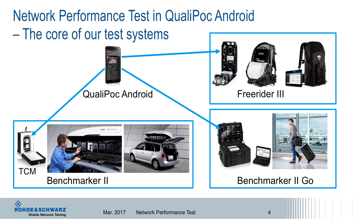The network performance test is integrated into our Qualipoc Android software running on the smartphone, and this is part of all our measurement equipment. Test solutions include the Freerider 3, which is a backpack solution; the Qualipoc Android integrated into the Benchmarker 2, which features the TCM — the test device containment module — offering a temperature-controlled environment for smartphones; and the Qualipoc Android integrated into the Benchmarker 2Go, a benchmarking system that can travel as normal luggage in aircraft. Network performance test is integrated in all these test solutions.